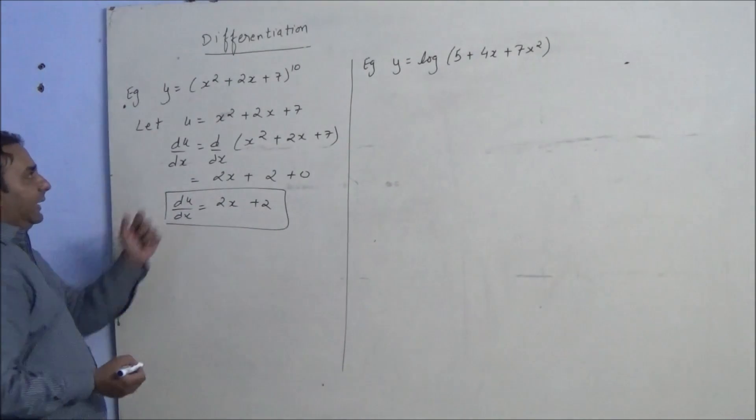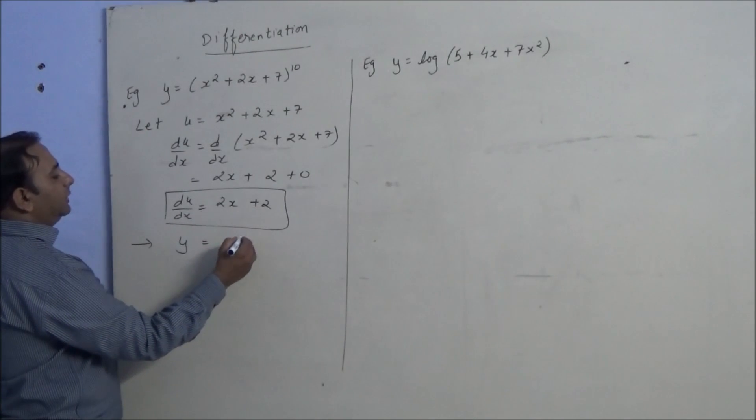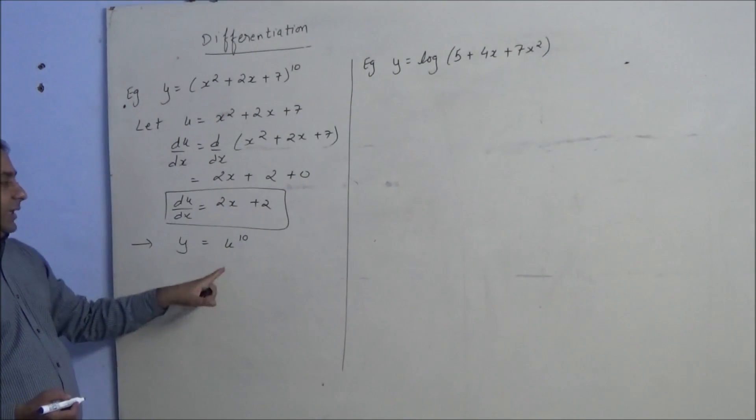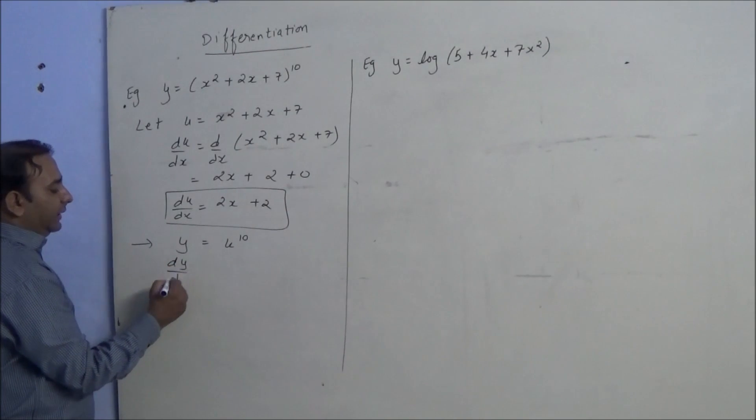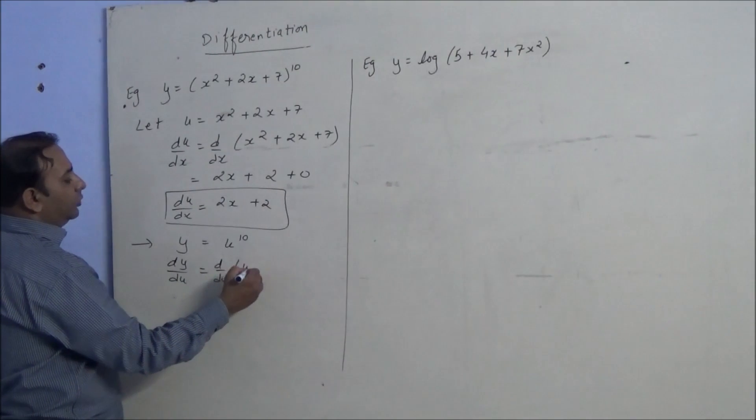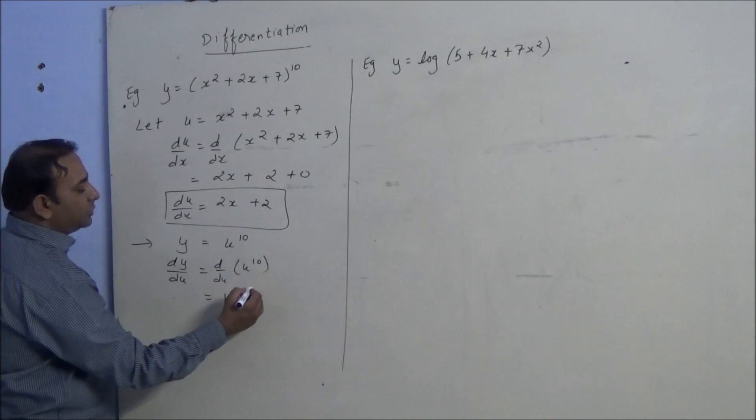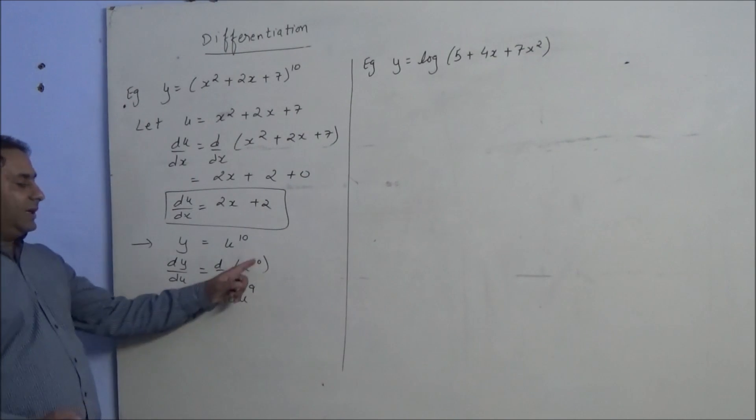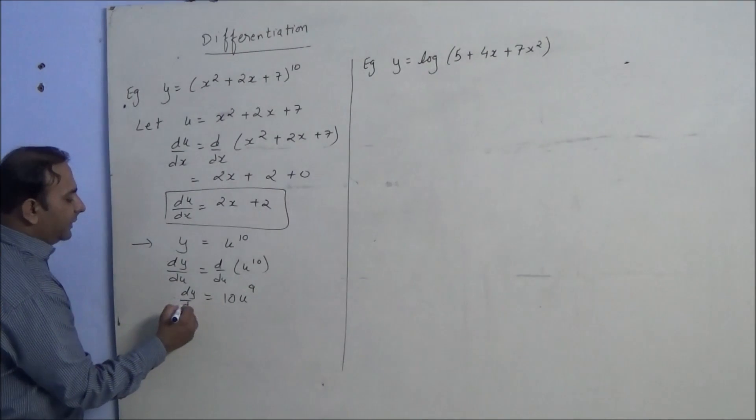Now, as we have taken this as u, we will write y equals u raised to 10. Now finding the derivative of this, dy by du of u raised to 10, this will become 10u raised to 9, that is 10 minus 1 is 9. So we get dy by du.